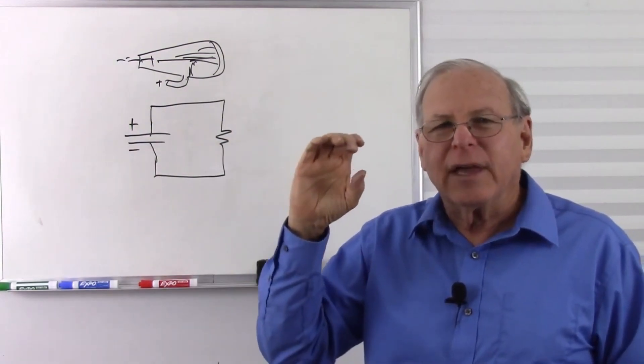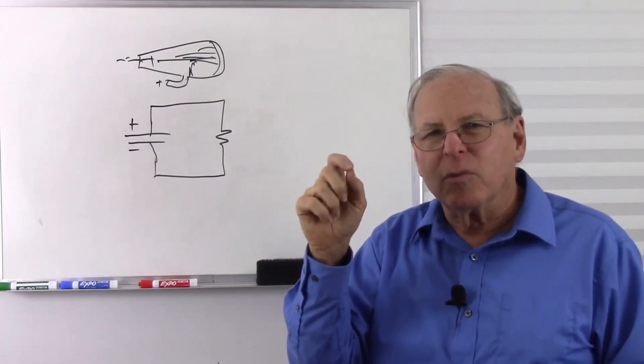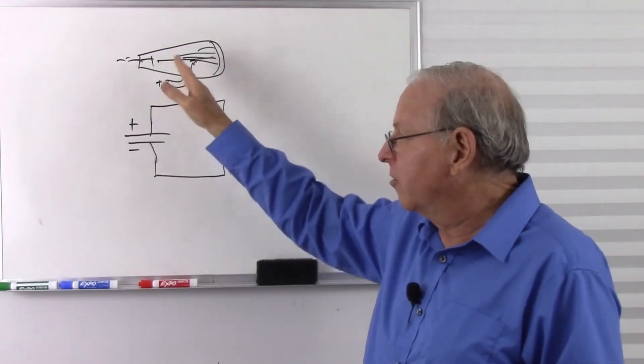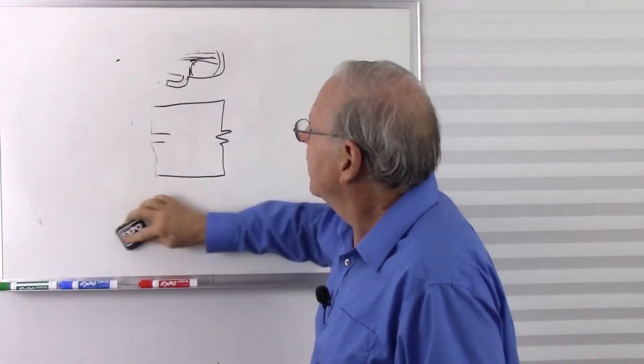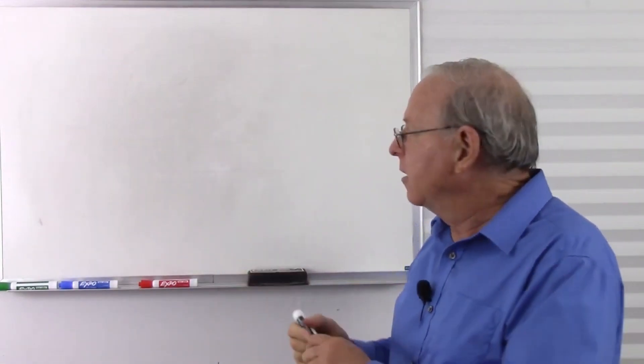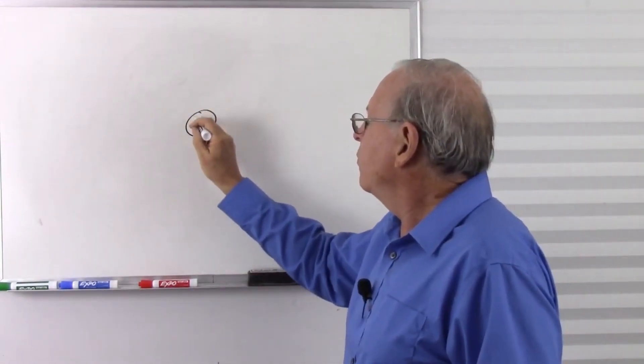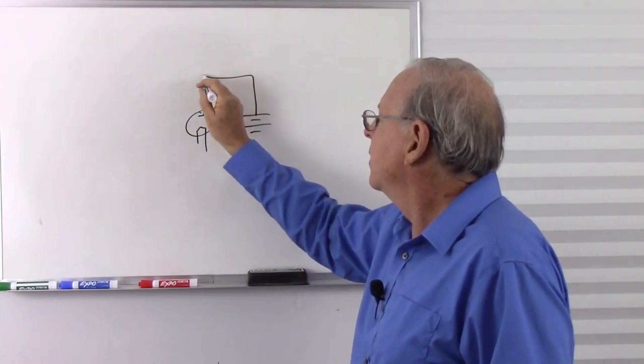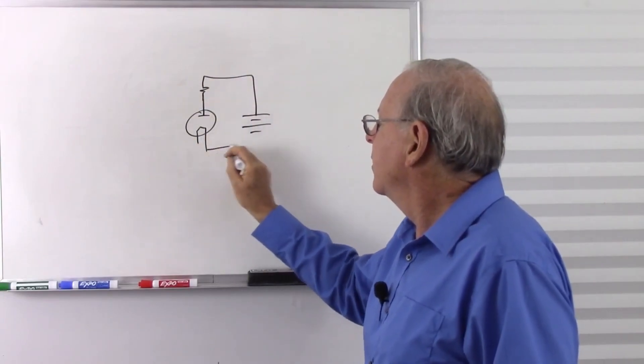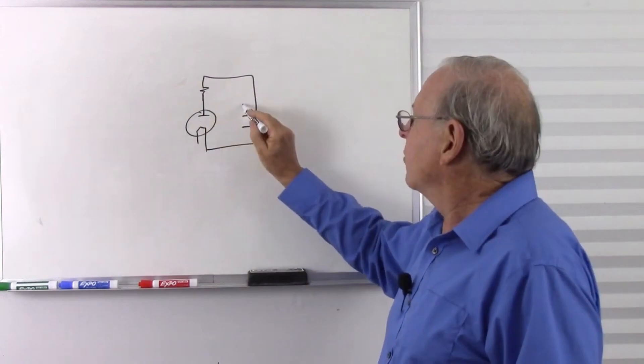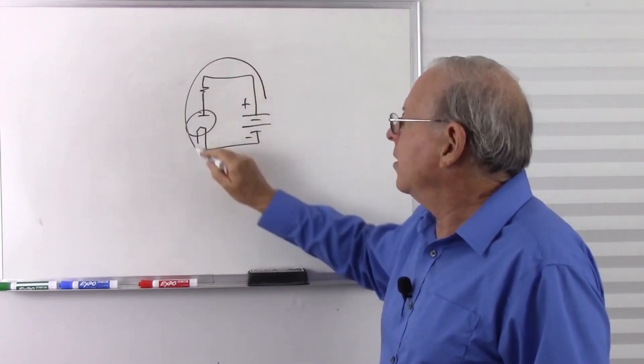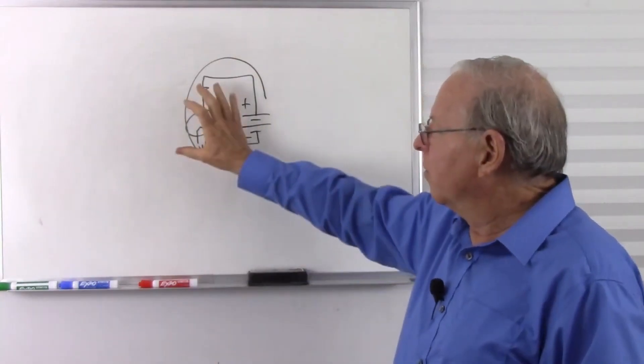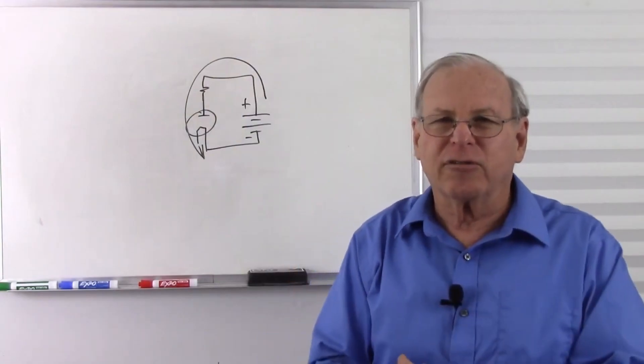So unless we're dealing with a vacuum tube where we have to explain how a vacuum tube works, we have to use electrons or crooks tubes or cathode ray tubes, we have to follow the electrons to explain how they work. But even with electron tubes, or valves as you call them in England, once we get past the explanation about how they work, then we can actually say, well, as we analyze the circuit, we can use conventional flow. Once we know what it's doing, we can ignore what's going on in there and just follow the circuit as a whole and use conventional flow.